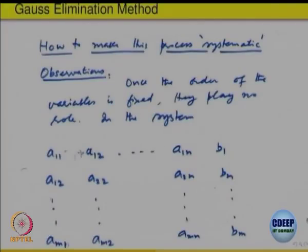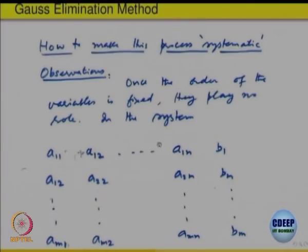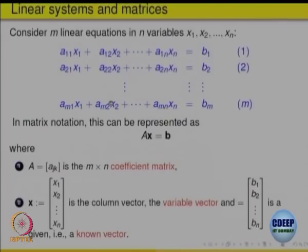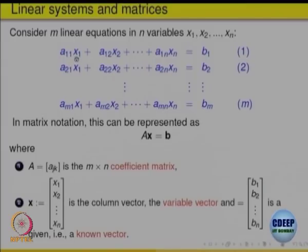To make the system more systematic, we realize that the coefficients are important, not the variables. So we just look at the array of coefficients: a11, a12, and so on, with the right-hand side b1. This array of numbers gives us the concept of a matrix. The m×n array of coefficients a_jk is called the coefficient matrix A.